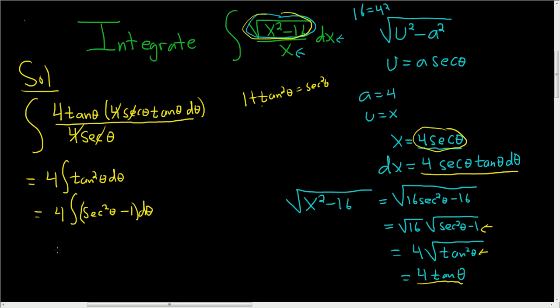Let's break this up into two integrals. This will be the integral of 4 secant squared theta d theta minus 4 d theta.